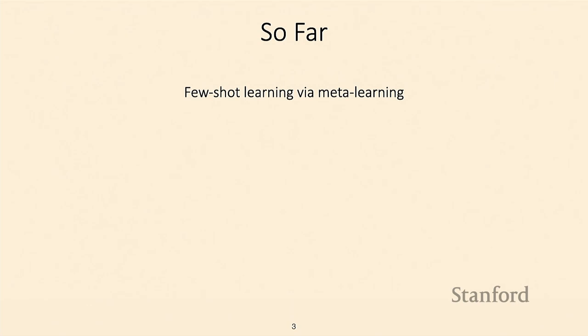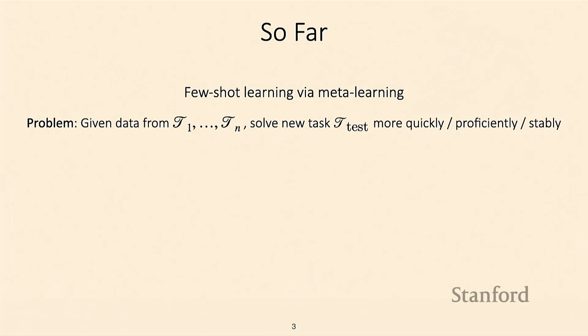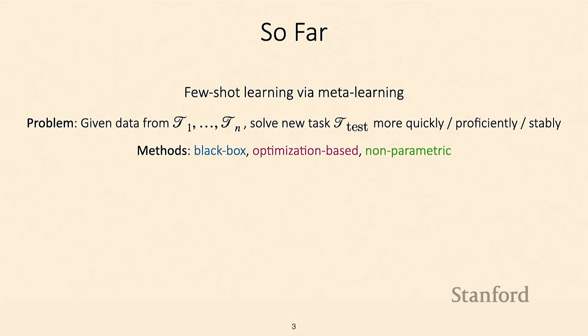To start today's content: so far we've been talking a lot about few-shot learning by using meta-learning. The problem setup was that we were given data from some number of training tasks and we wanted to quickly solve a new task more quickly, more proficiently, or more stably. We overviewed a few different methods: black-box meta-learning, optimization-based meta-learning, and non-parametric methods. One big assumption these algorithms make is that you have access to a set of training tasks.